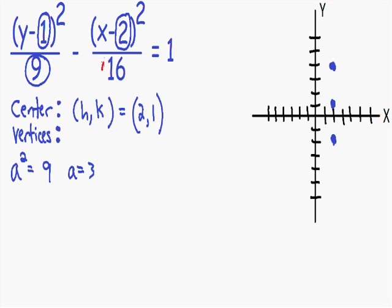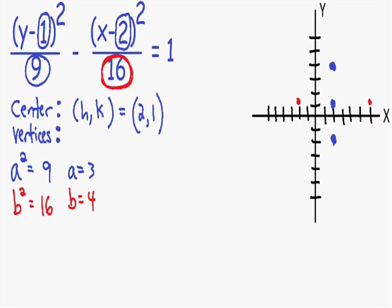Next we find our b value. The b² term is always the second denominator, on the right. So b² = 16, and b = √16 = 4. Our b is the distance from the center in the opposite direction of the vertices. Since the vertices go up and down, b goes left and right. So we plot points 4 units to the right and 4 units to the left of the center.